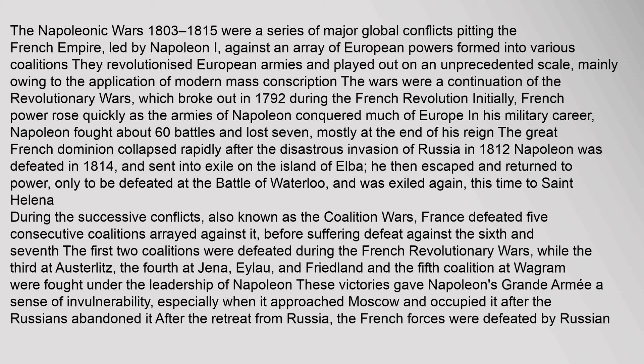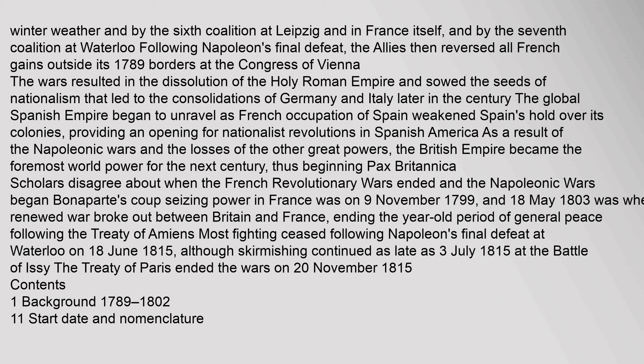The great French dominion collapsed rapidly after the disastrous invasion of Russia in 1812. Napoleon was defeated in 1814 and sent into exile on the island of Elba. He then escaped and returned to power, only to be defeated at the Battle of Waterloo, and was exiled again, this time to St. Helena. France defeated five consecutive coalitions arrayed against it before suffering defeat against the 6th and 7th. The first two coalitions were defeated during the French Revolutionary Wars, while the third at Austerlitz, the fourth at Jena and Friedland, and the fifth at Wagram were fought under Napoleon's leadership.